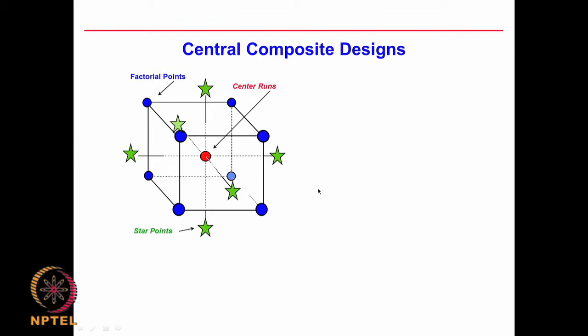This is better than a 3^3 type of full factorial design where 3 levels and 3 factors gives 3 into 3 into 3 into 3 which is 27. Whereas with 15 experiments I am able to change each factor at 5 levels, whereas a 3^3 design will change each factor only at 3 levels. So that way this is extremely powerful.